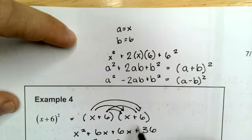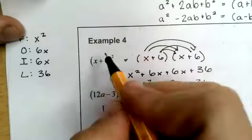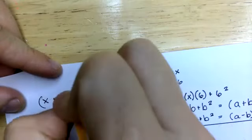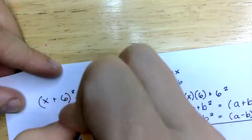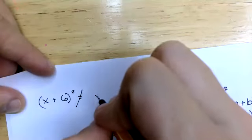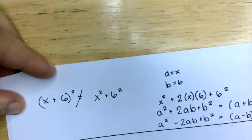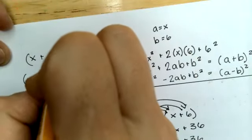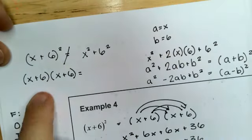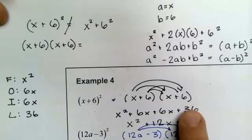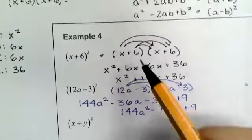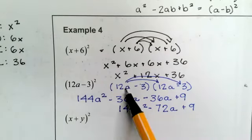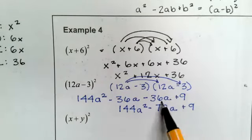What is essential to know when you see something like this is that this does not equal x squared plus six squared. What you have to do is take that whole situation and multiply it by itself, so that means you end up FOILing. So the only things you need to know to do these, even though it does give you these formulas, all you need to know is to write this twice and then FOIL it and then combine like terms.